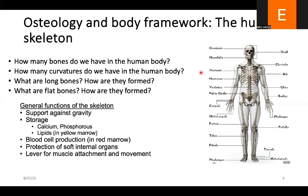The general functions of the skeleton are fundamental. It provides support against gravity — without your skeleton and body framework, the muscles and skin would just drop down by gravity like a heap of rag, just like a sack without containment. It also provides storage of calcium, phosphorus, and lipids in the yellow marrow. Then blood cell production occurs in the red marrow. It also provides protection of soft internal organs like the brain, heart, liver, and lungs. It also serves as a lever for muscle attachment and movement.